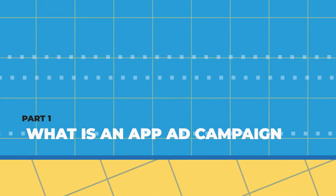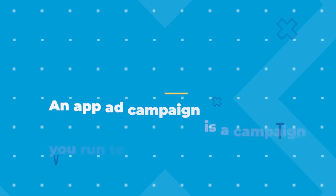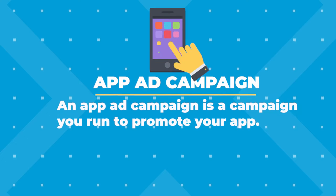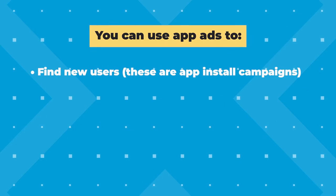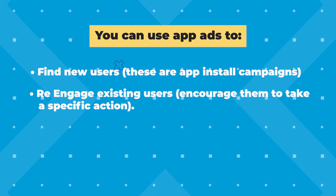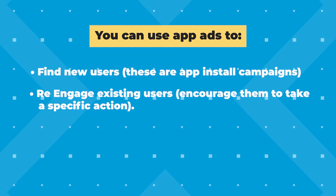First, what is an app install campaign? An app ad campaign is a campaign that, you guessed it, you run to promote your app. If you have an app at all, you should definitely be using these. You can use app ads to find new users — these would be app install campaigns — or re-engage existing users, like encouraging them to take a specific action. These are app engagement campaigns.